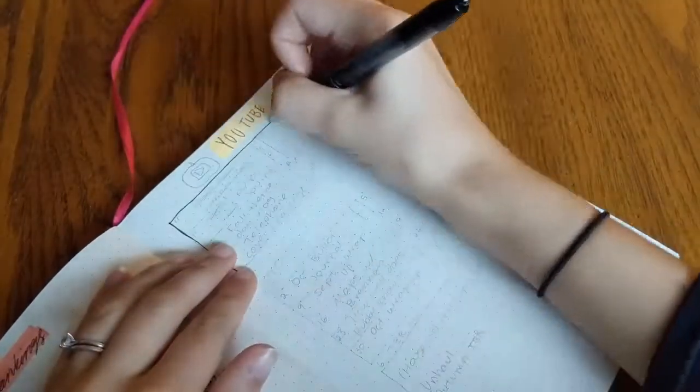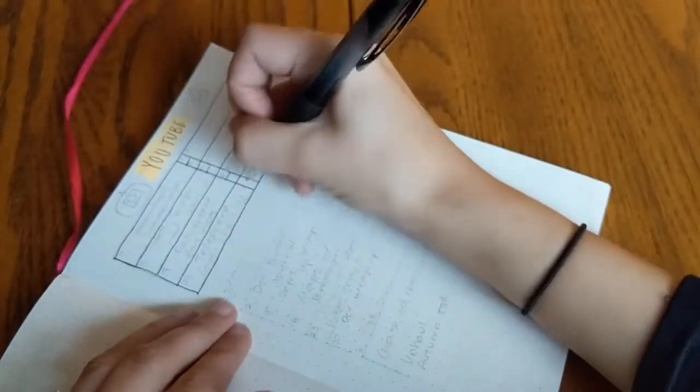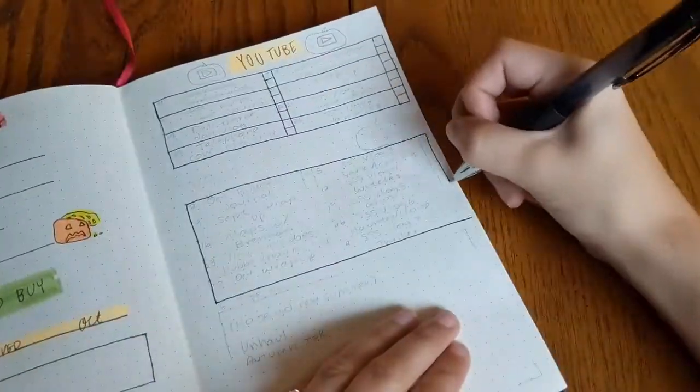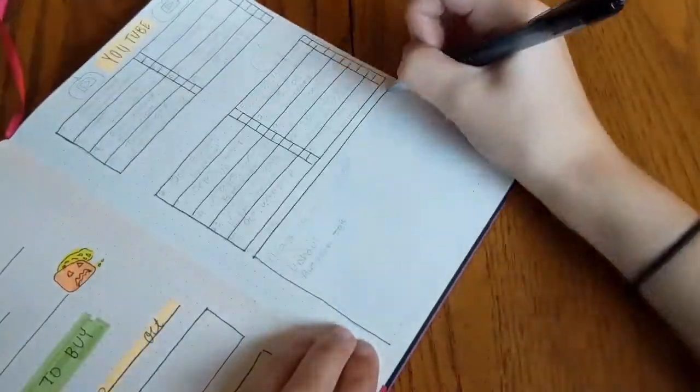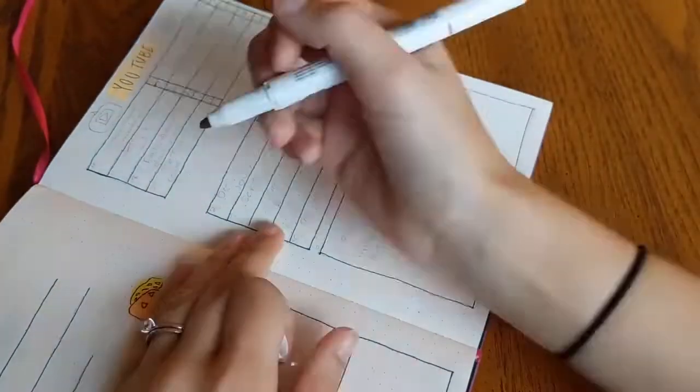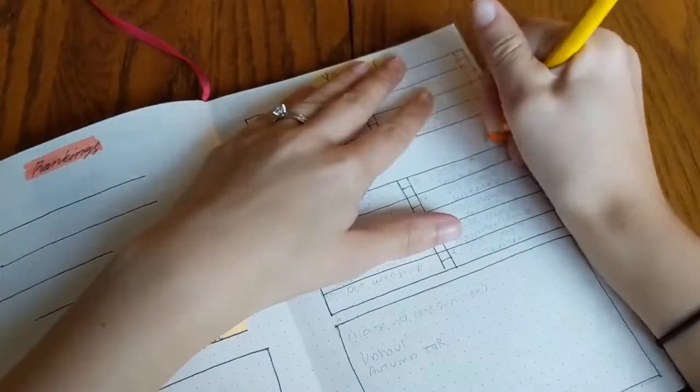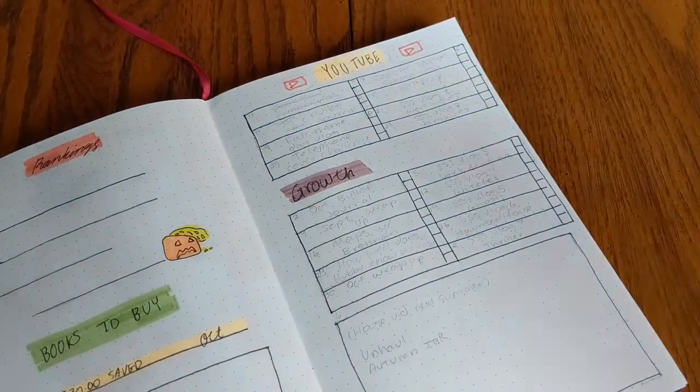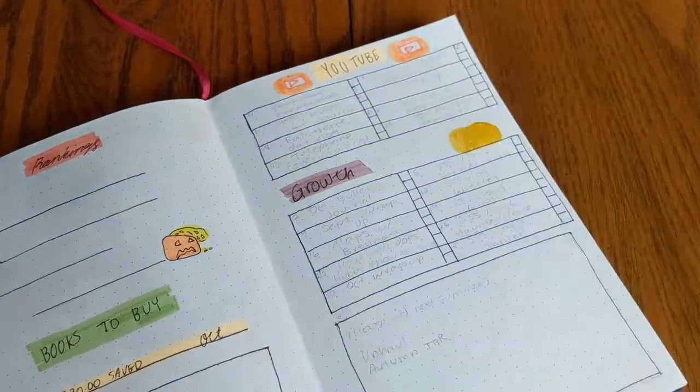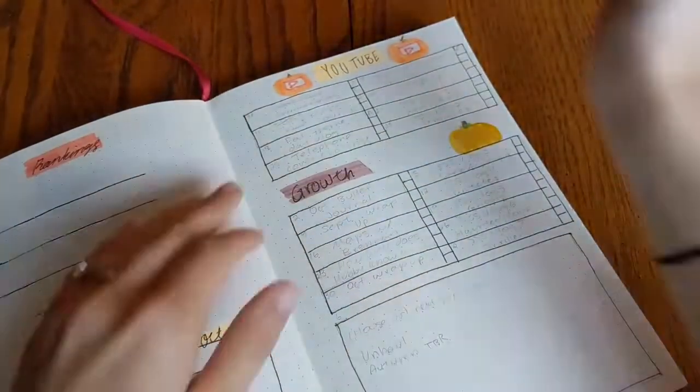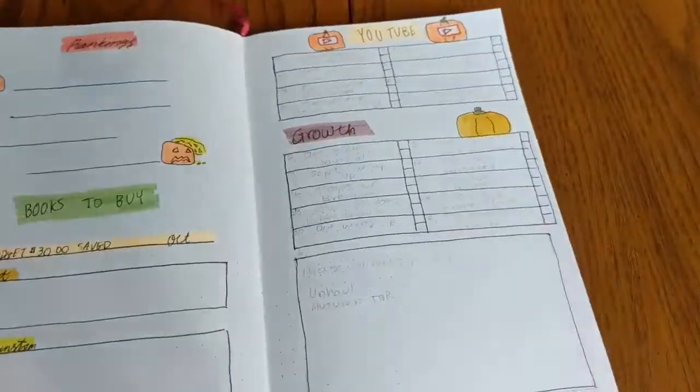Next up is my YouTube spread. All of my social media spreads will be fairly basic in terms of having the same structure and then just adding pumpkins here and there to decorate. My YouTube spread is already pretty filled out because I've been doing so much work trying to catch up on videos this past month. I just couldn't wait for the spread to be done and I needed somewhere to put my thoughts. Now it looks a lot nicer and I can truly keep track of what videos I filmed, edited, and what ones are posted and all ready to go.